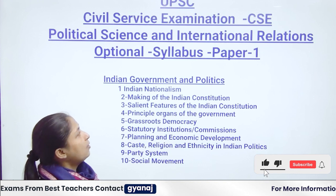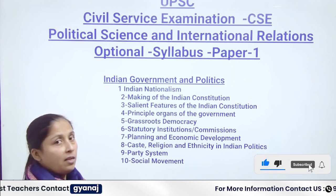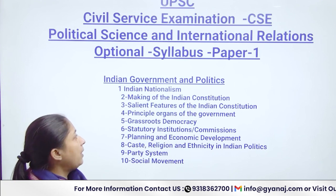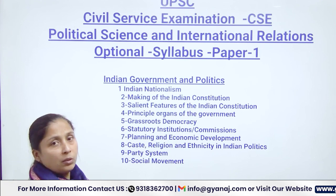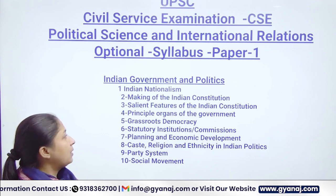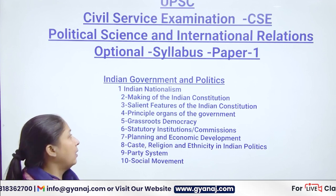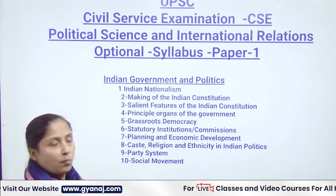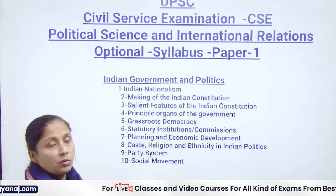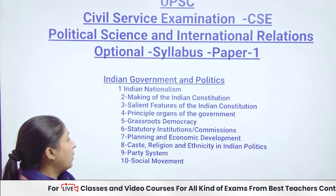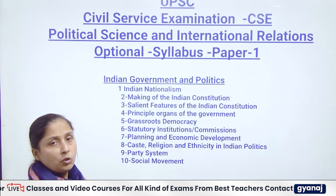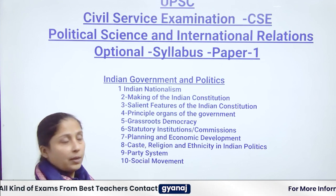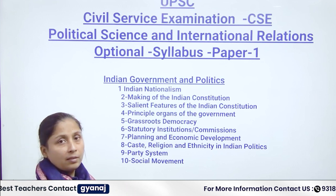Indian Government and Politics — in this section you will learn: number one, Indian nationalism; number two, making of the Indian constitution; number three, salient features of the Indian constitution; number four, principal organs of the government; number five, grassroots democracy; number six, statutory institutions and commissions; number seven, planning and economic development.